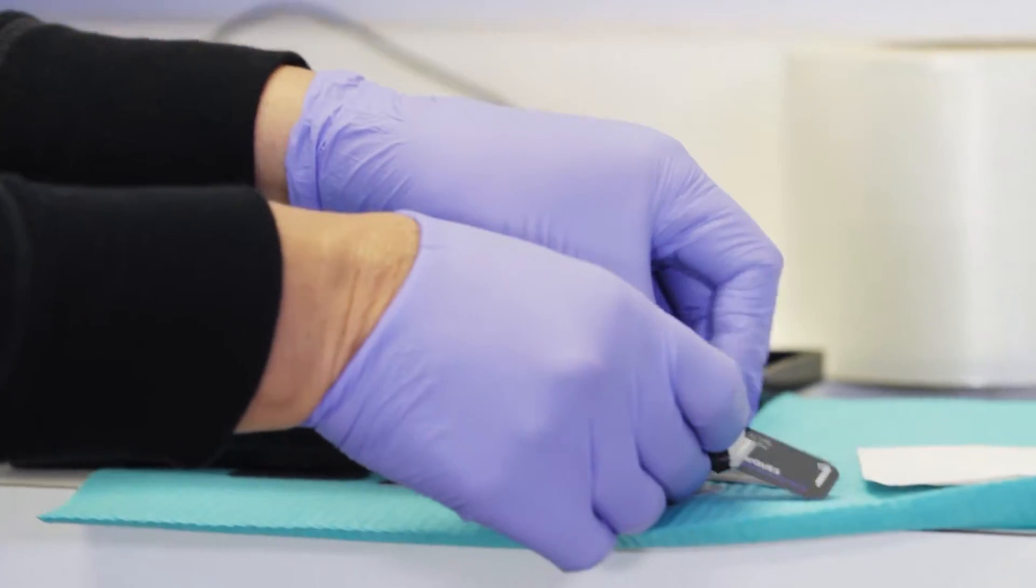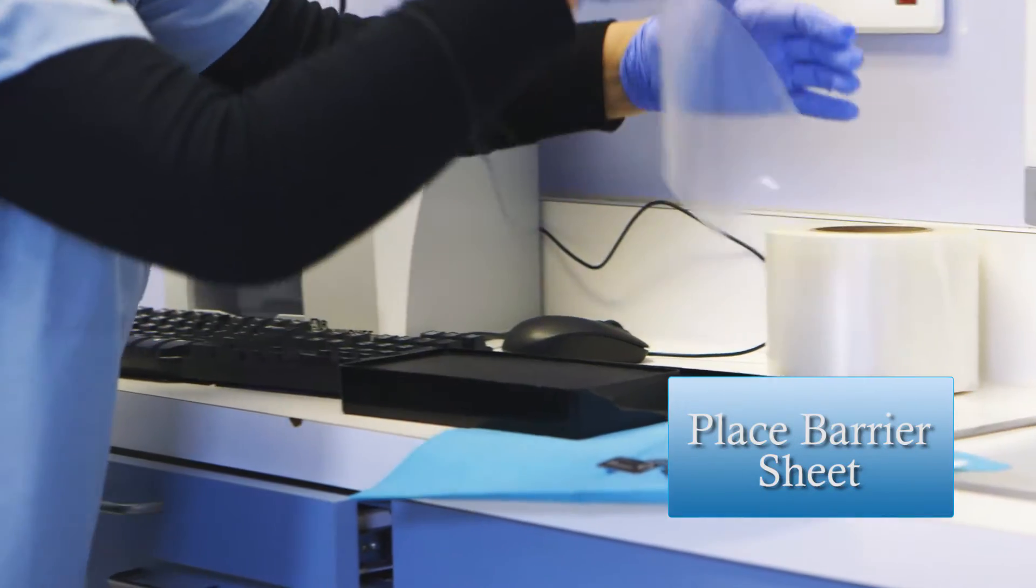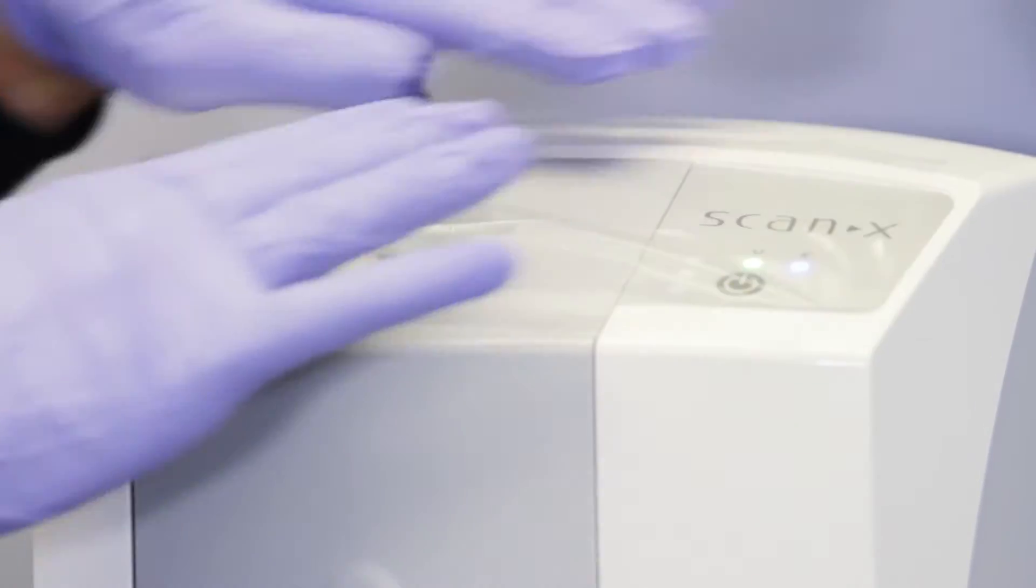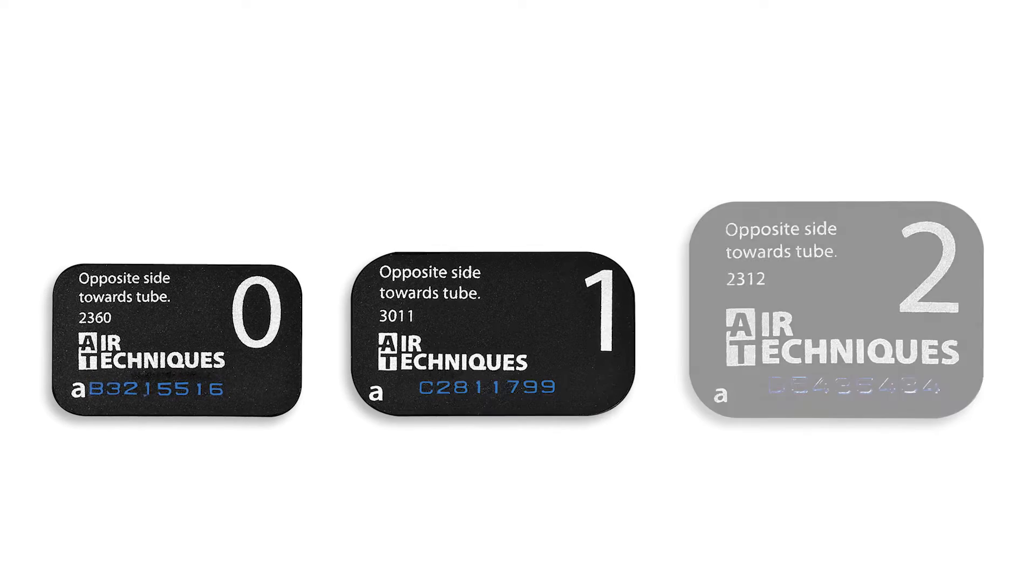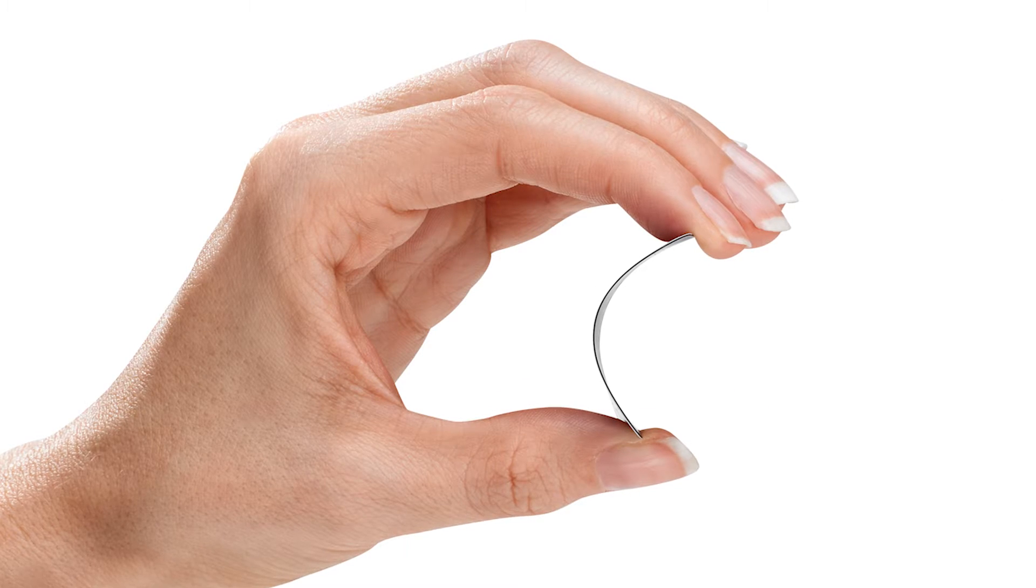After prepping your phosphor sensors, place the barrier sheet over the Scanex Swift insert. Sizes 0, 1, and 2 of the Scanex Phosphor sensor are interchangeable.